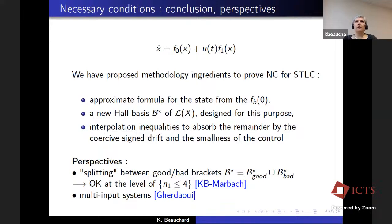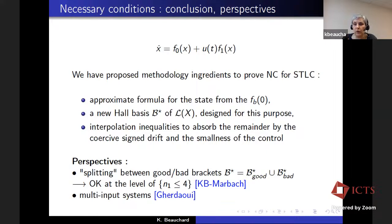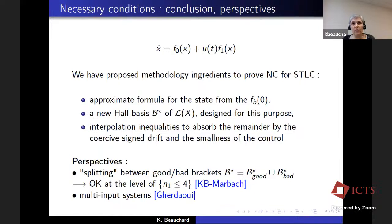To conclude about control of affine systems in finite dimension, we have proposed a methodology to prove necessary conditions for small-time local controllability. It relies on an approximate formula for the state from the Fb of zero, a new Hall basis of L of X designed for this purpose, and interpolation inequalities to absorb remainders by a coercive sign-in drift and the smallness assumption on the control. To prove necessary conditions for control, you have to do algebra, geometry, and analysis — all three are necessary.